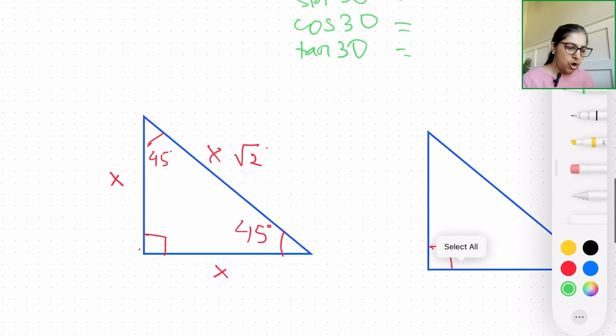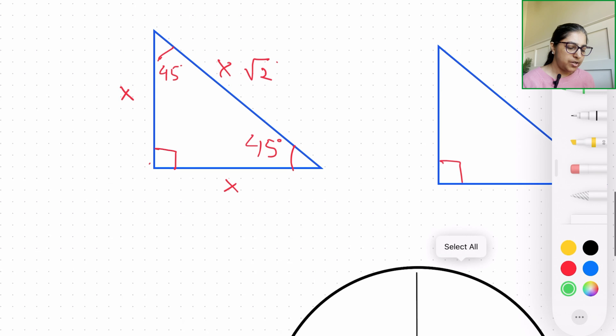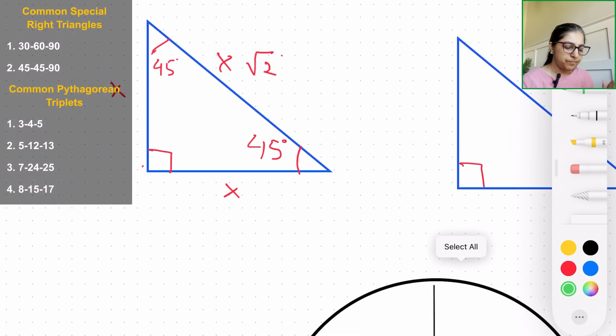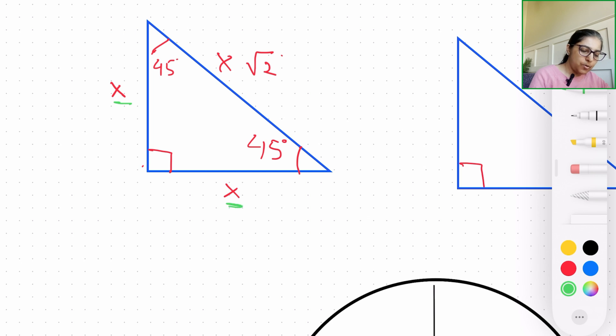All right, the next common special right triangle is going to be a 45-45-90. Now on this one, both the legs, the perpendicular ones that form the L shape on a right angle triangle, are of the same length x, any number. And the hypotenuse is going to be x × √2.